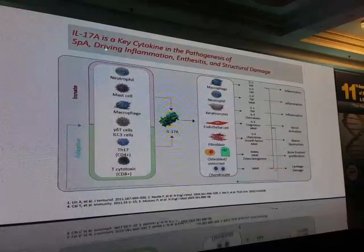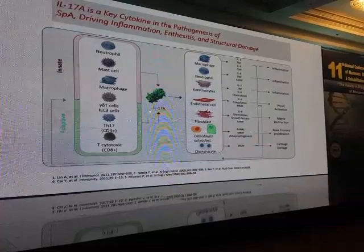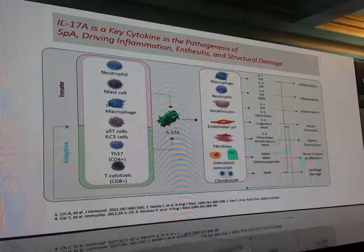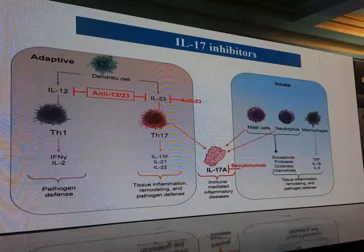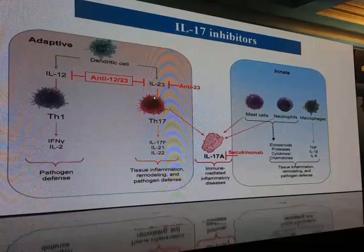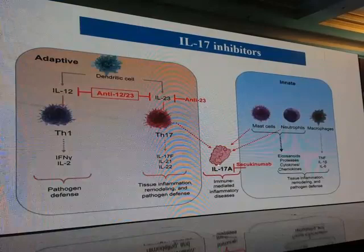IL-17A is now believed to be a key cytokine in the pathogenesis of SpA. It is produced by both arms of the immune system — the innate and adaptive immune systems — and acts upon other cells to produce many inflammatory cytokines, resulting in inflammation, bone erosion, and cartilage damage. IL-17A production occurs via two different mechanisms: in the adaptive immune system it follows an IL-23 dependent pathway, while from the innate system it is independent from IL-23. So to completely inhibit IL-17A, we have to target it directly.